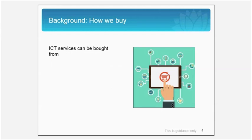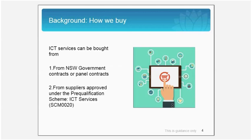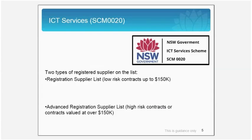A bit of background on how we buy. NSW Government agencies can buy ICT services by engaging in either of two ways: the NSW Government contract or panel contracts like the whole of government hardware contract 999, or from suppliers approved under the pre-qualification scheme, the ICT services scheme 0020. There are two categories of suppliers on the ICT services scheme: registered suppliers who are signed up to provide services for contracts which are up to $150,000, which are deemed low-risk, and advanced registered suppliers who can be engaged with for work over $150,000, essentially considered high-risk.